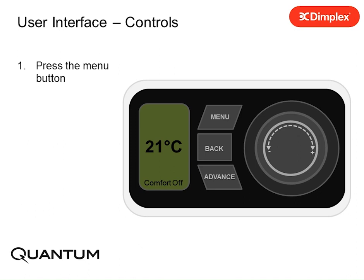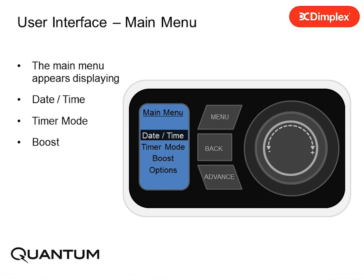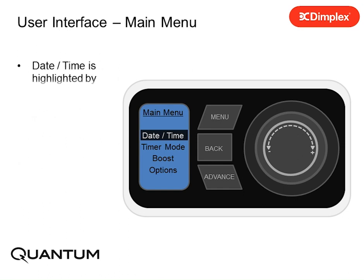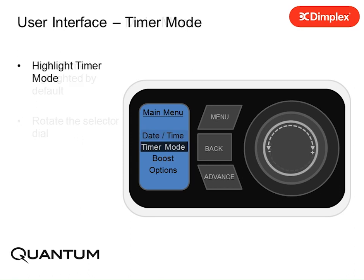Press the menu button. The main menu appears displaying date and time, timer mode, boost, and options. Date and time is highlighted by default. Rotate the selector dial to highlight timer mode and press the selector dial.